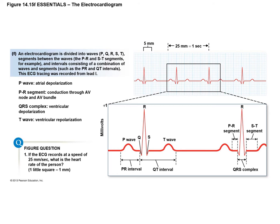Now I'm going to talk about a few of the other components. First is the PR interval, which is the total duration of the P wave — from the very start of the P wave all the way to the start of the QRS complex. This represents the entire electrical activity of the atria as far as its depolarization. Next is the QT interval. The QT interval represents the entire duration of ventricular electrical activity. It goes from the very start of the QRS complex to the very end of the T wave, covering both the depolarization and the repolarization.